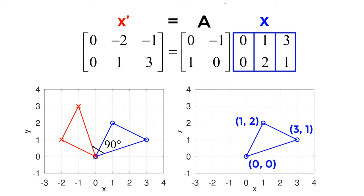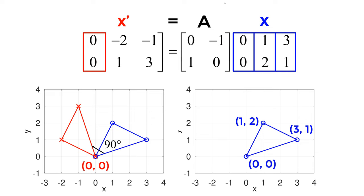If you want to rotate 90 degrees counterclockwise, you can simply plug 90 degrees into theta. Your transformation matrix A becomes [[0, -1], [1, 0]]. Once you multiply A by x, you can calculate the new coordinates for the rotated triangle: (0,0), (-2,1), and (-1,3), which are shown as the resulting x prime. This is graphically shown in red color.